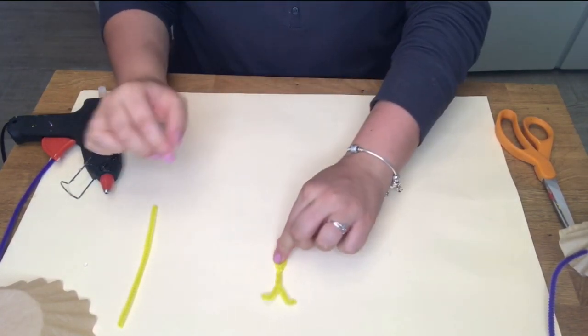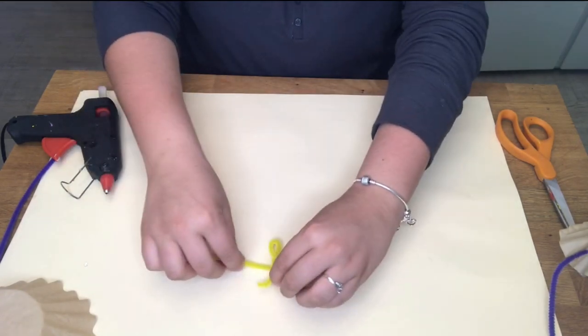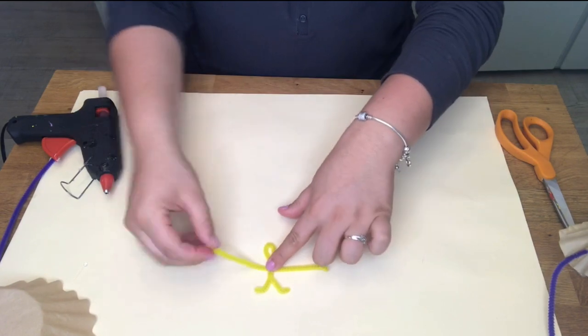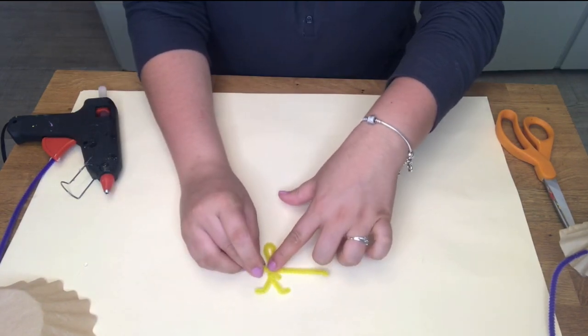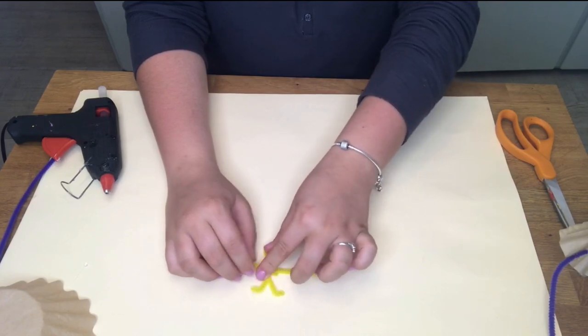Now place them down and you're going to take your other pipe cleaner and you're going to go behind the body of the Parachute Man. Take each end and bring them to the center and crisscross them in the middle.